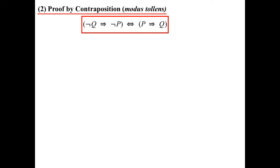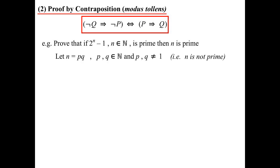Here's a new one: proof by contraposition — in Latin, modus tollens. It uses the contrapositive idea. Sometimes it's easier to prove the contrapositive than the actual statement. Prove that if 2^N − 1, where N is a natural number, is prime, then N is also prime. I'm going to let N equal P times Q. I'm proving the contrapositive — assuming N is not prime — so neither P nor Q will equal 1.